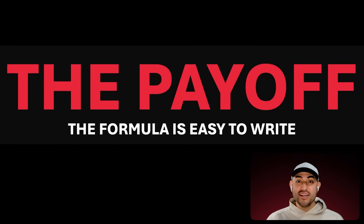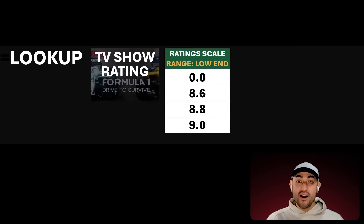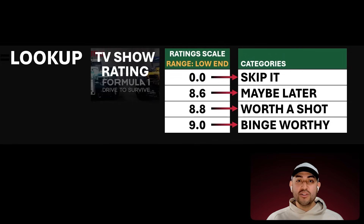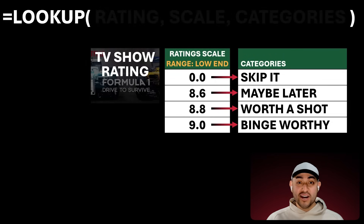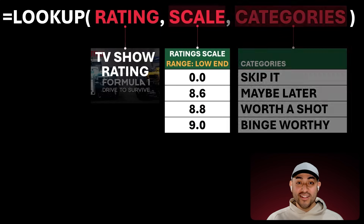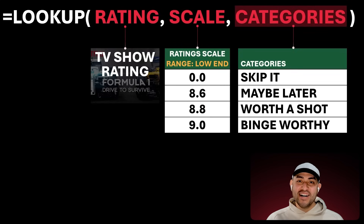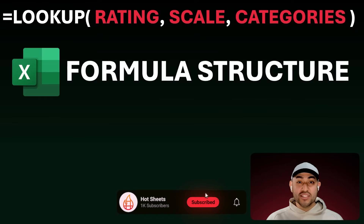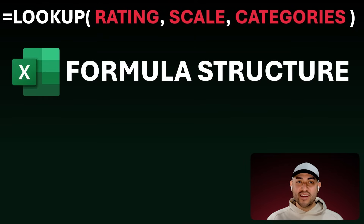Are you ready for the big payoff? The formula is going to be so simple to write because we've already described it: look up a TV show's rating on a scale and return the corresponding categories. And here's the formula — lookup, rating, scale, categories. Isn't that really intuitive and simple? In fact, I bet we can just jump into Excel and write a lookup formula in under 20 seconds, and then we can build our list of great shows to watch.